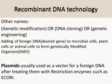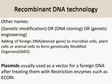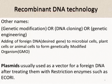Recombinant DNA technology depends on adding foreign DNA fragments — desired genes — to microbial cells. The desired gene is linked to a vector. The main vector used in recombinant DNA technology is the plasmid, which is treated with restriction enzymes before linking. The most important restriction enzyme used is ECO-R1. Other names for recombinant DNA technology include genetic modification, genetic engineering, or DNA cloning.